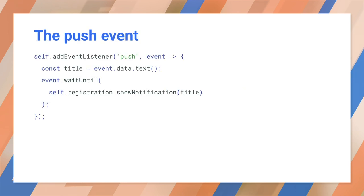To display a push notification, you listen for the push event in the service worker. You get the push message data from the push event object. In this example, we simply convert the message data to text. We wrap show notification in a wait until to extend the lifetime of the push event until the show notification promise resolves. The push event will not be reported as successfully completed until the notification has displayed.